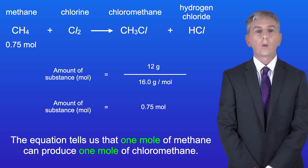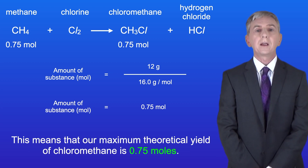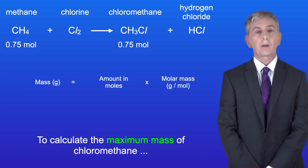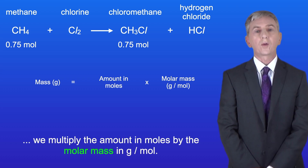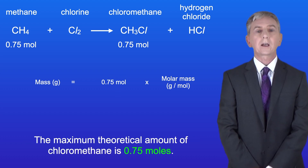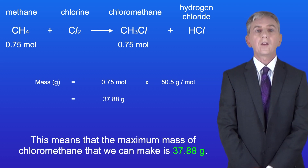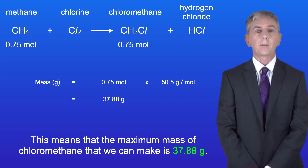The equation tells us that one mole of methane can produce one mole of chloromethane. This means that our maximum theoretical yield of chloromethane is 0.75 moles. To calculate the maximum mass of chloromethane we multiply the amount in moles by the molar mass in grams per mole. The molar mass of chloromethane is 50.5 grams per mole. This means that the maximum mass of chloromethane that we can make is 37.88 grams.